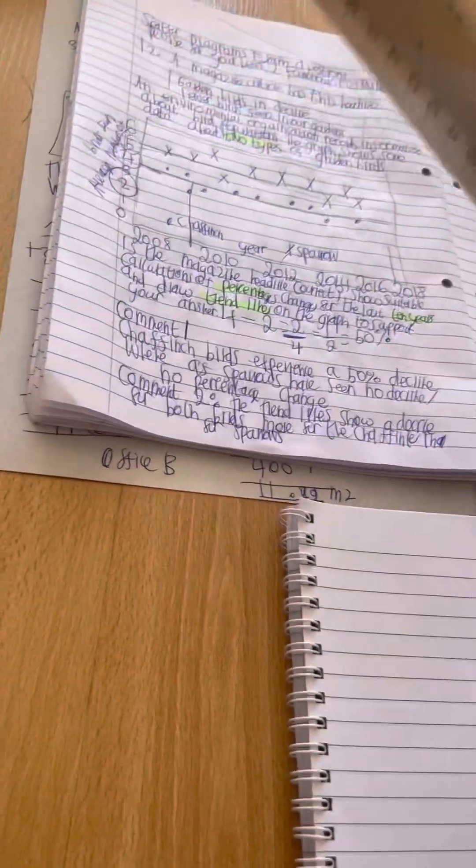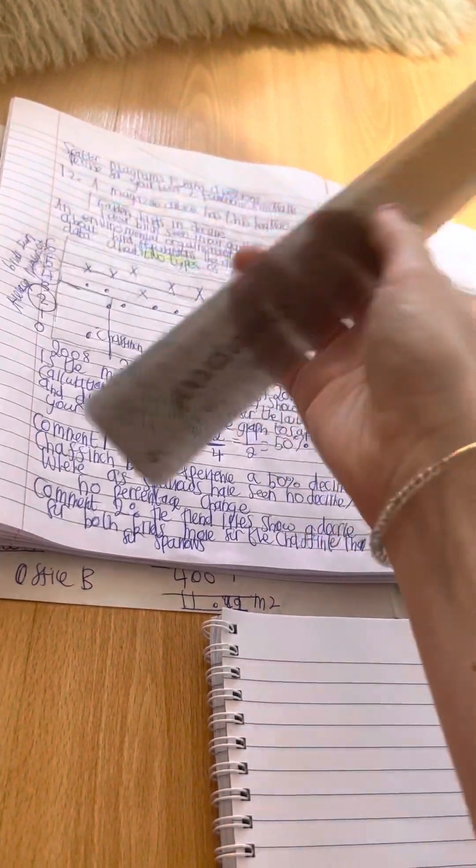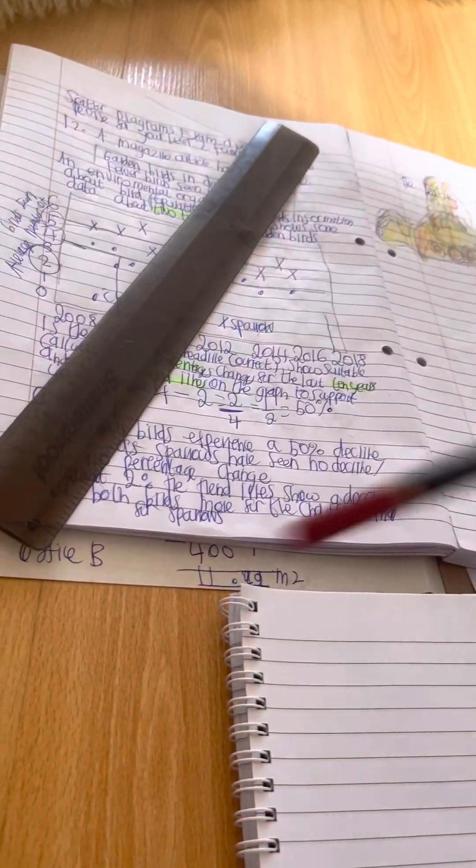So I'm going to get a shatterproof ruler. This ruler that I use, I'll bring it close to the camera. It's a shatterproof ruler and it's got the numbers on. And I'm going to use one of my favorite pencils.